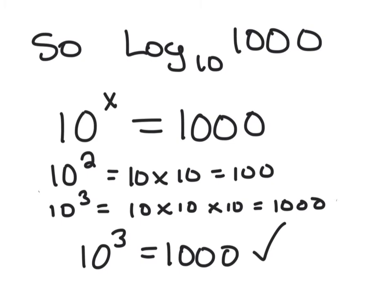10 squared equals 10 times 10, which equals 100. Not big enough. Then 10 to the third would be 10 times 10, which is 100, times another 10, which would be 1000. So that works perfectly.